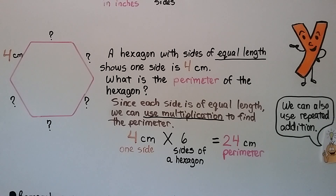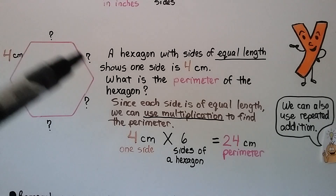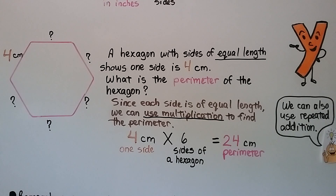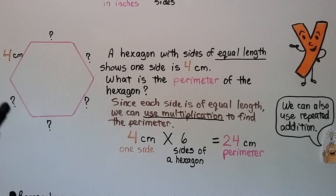A hexagon with sides of equal length shows one side is 4 centimeters. What is the perimeter of the hexagon? Since each side is of equal length, we can use multiplication to find the perimeter. We can do 4 centimeters times 6 sides of a hexagon. 4 times 6 is equal to 24, so the perimeter is 24 centimeters. We also could have used repeated addition: 4 plus 4 plus 4 plus 4 plus 4 plus 4, but multiplication is easier and quicker.